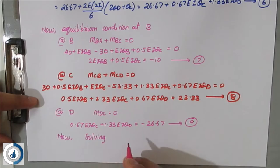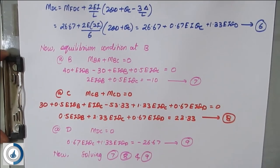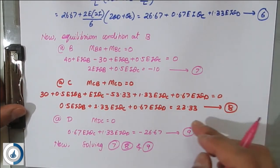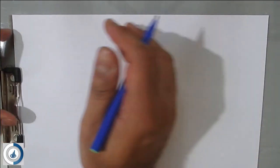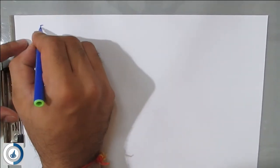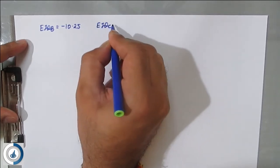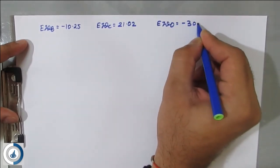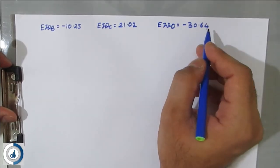Solving Equations 7, 8, and 9 using the calculator's equation mode: EI·θ_B = −10.25, EI·θ_C = 21.02, and EI·θ_D = −30.64. These three values will now be substituted back into Equations 1 through 6.